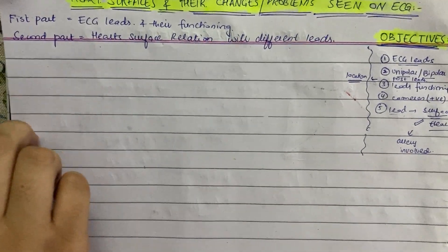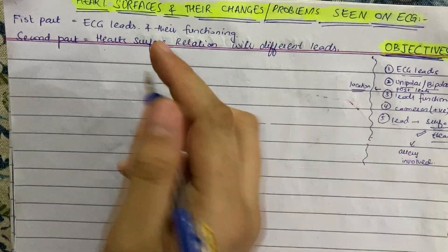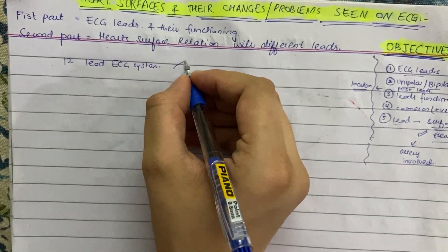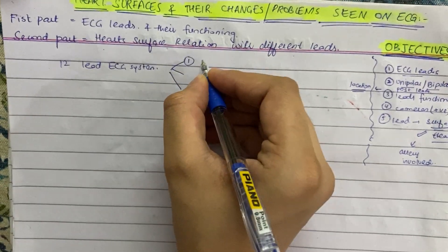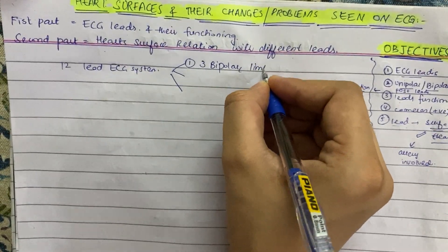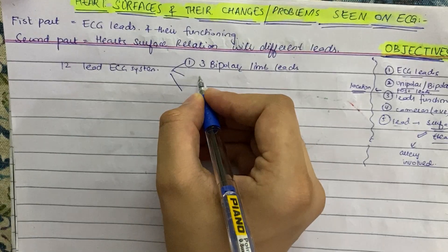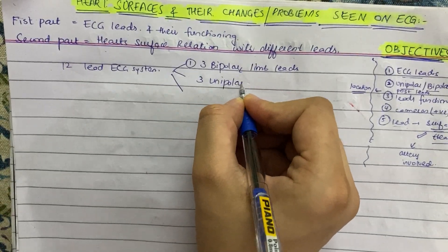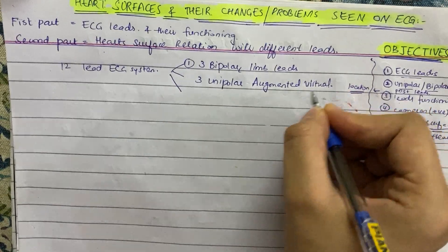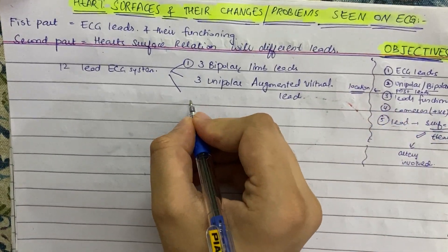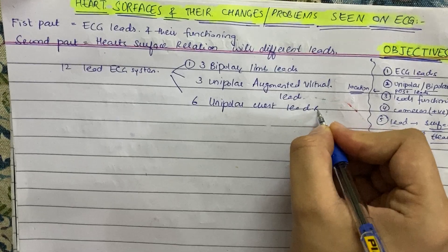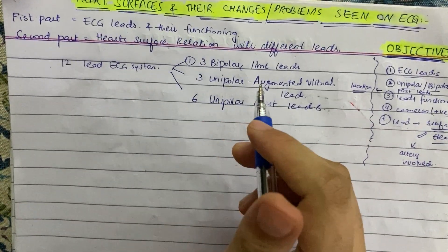Starting with ECG leads — we have a 12-lead ECG system. In this we have three types of leads: first, three bipolar limb leads; then three unipolar augmented virtual leads; and then six unipolar chest leads. This is the whole system of 12 ECG leads.